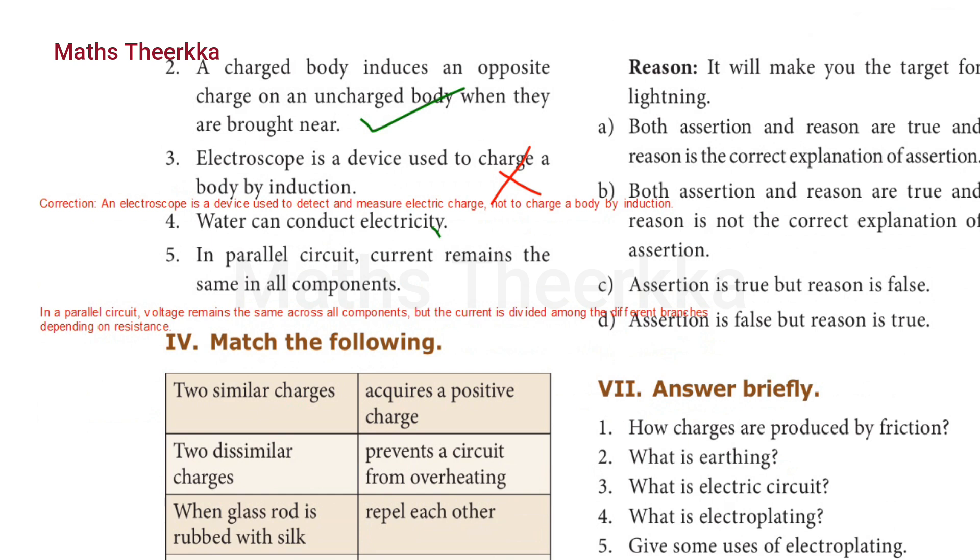Fourth one: water can conduct electricity. True. Fifth one: in parallel circuit, current remains the same in all components. The answer is false because in a parallel circuit, voltage remains the same across all components but the current is divided among the different branches depending on resistance.